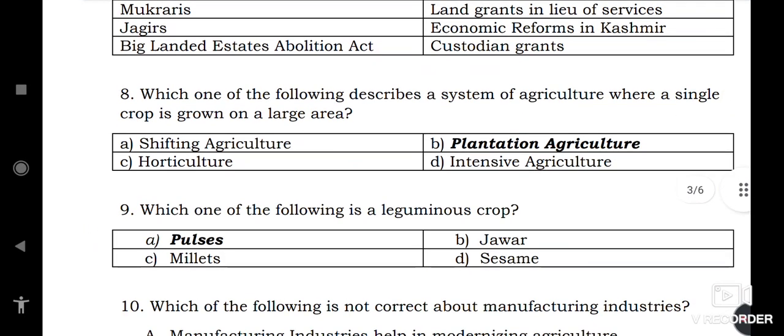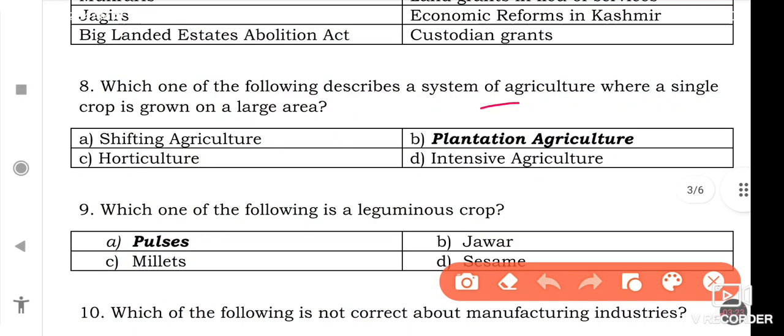Which one of the following describes a system of agriculture where a single crop is grown on a large area? It is Plantation Agriculture. Which one of the following is a leguminous crop? It is Pulses.